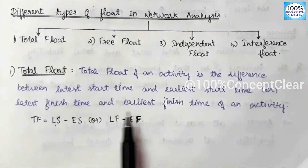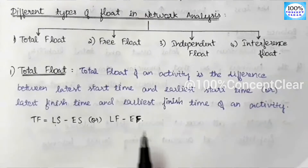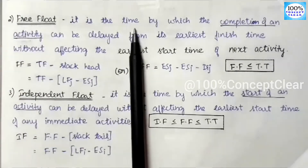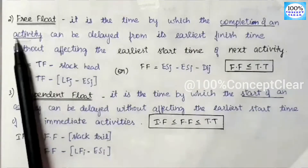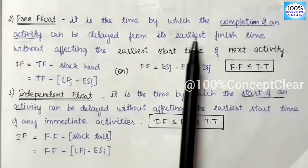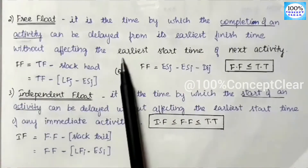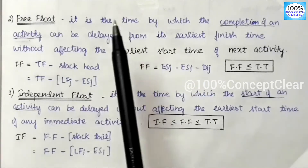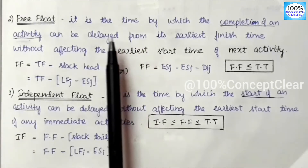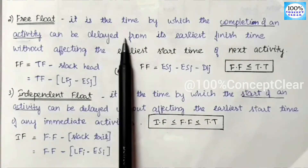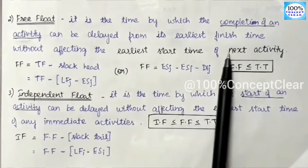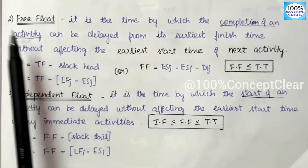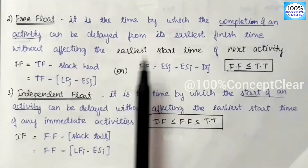The second type of float is Free Float. It is the time by which the completion of an activity can be delayed from its earliest finish time without affecting the earliest start time of the next activity.